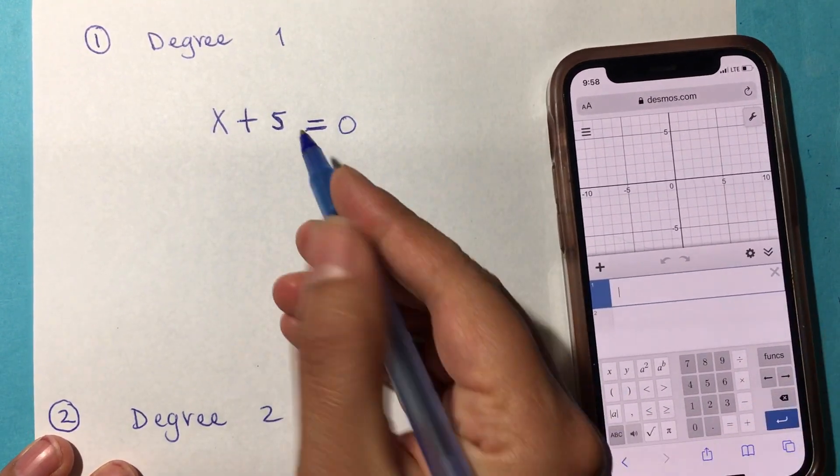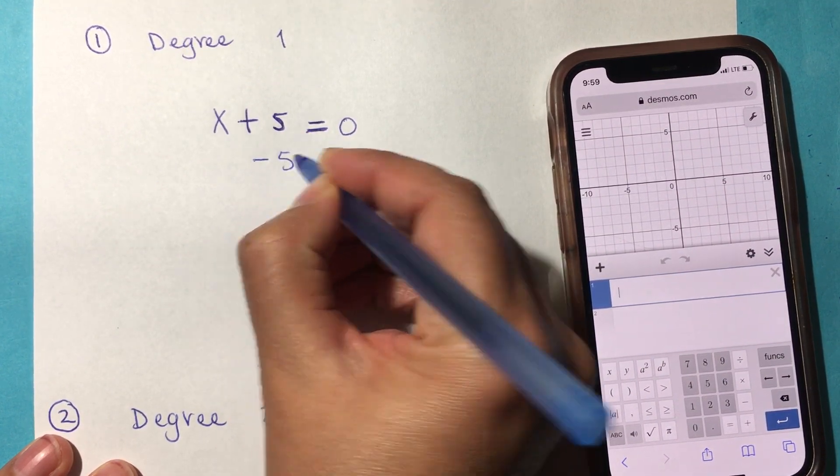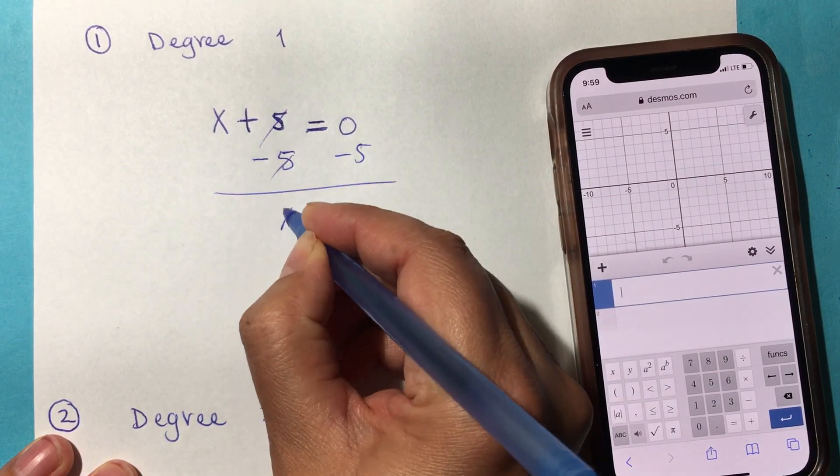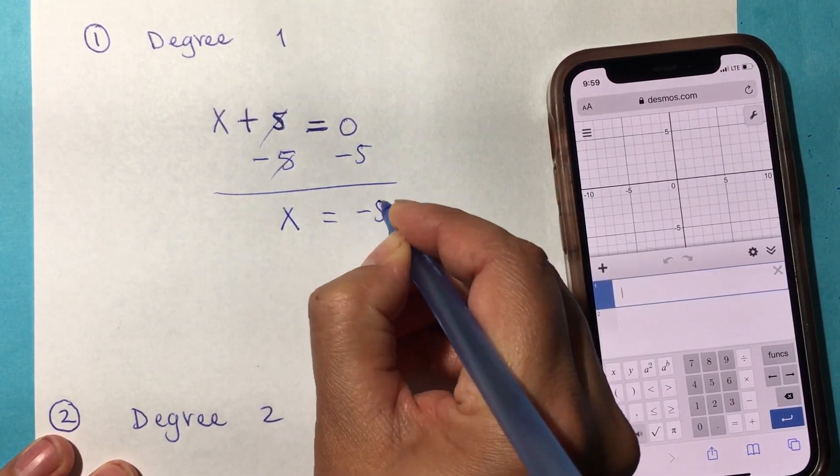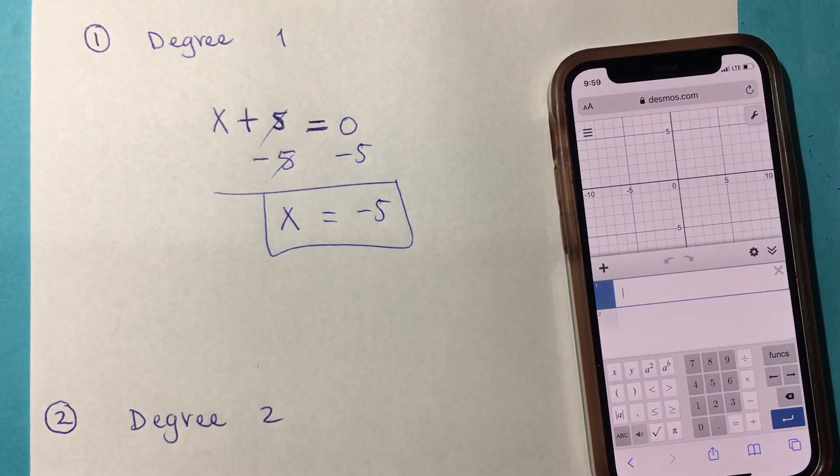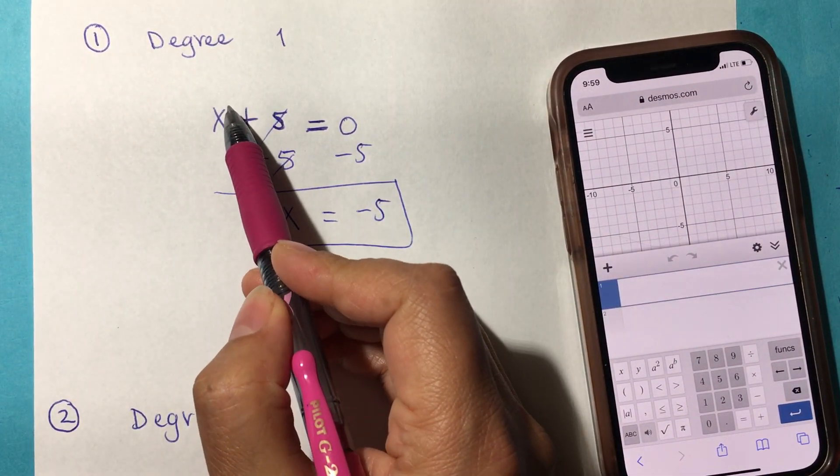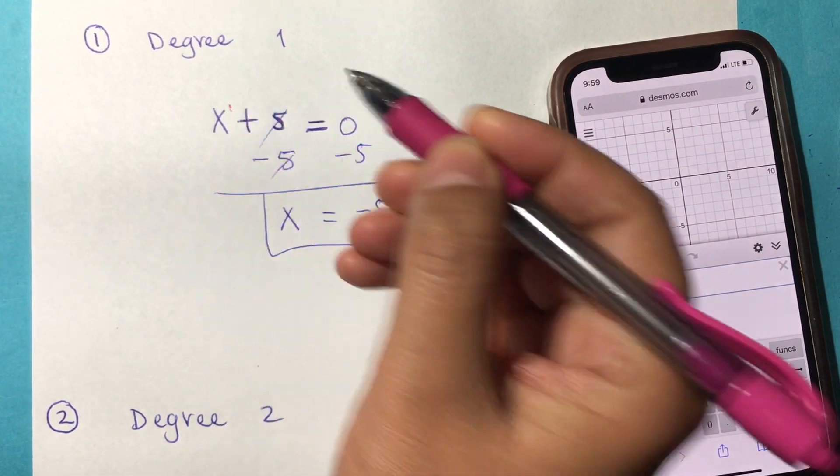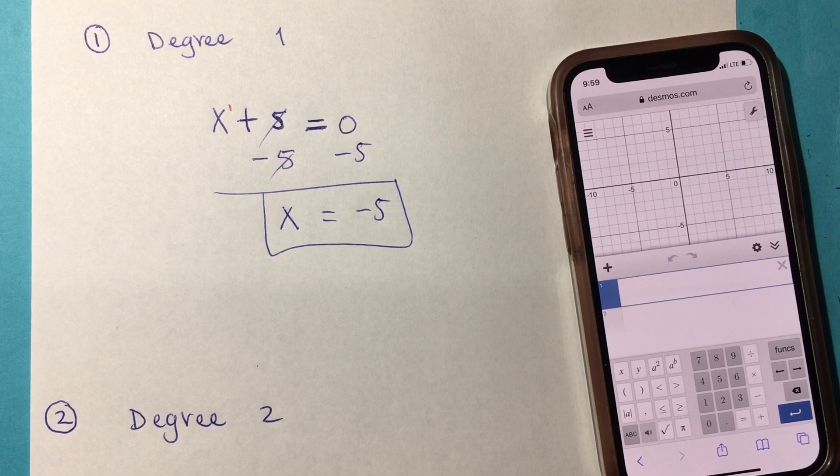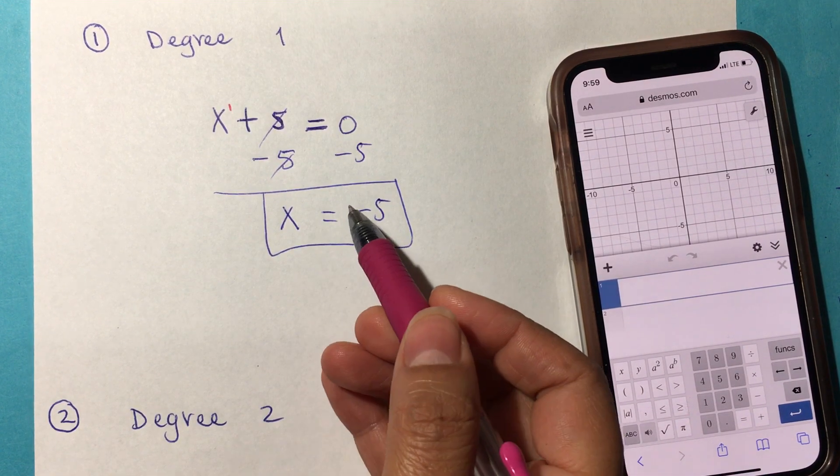You already know that to solve x + 5 = 0, the solution is just to solve for x by canceling. You get x equals negative 5. So that's just one solution. If it doesn't have an exponent, that means there is a 1. That's the degree of this linear equation, so one solution.